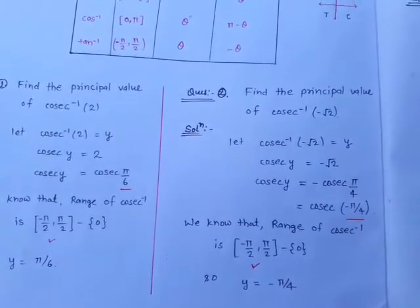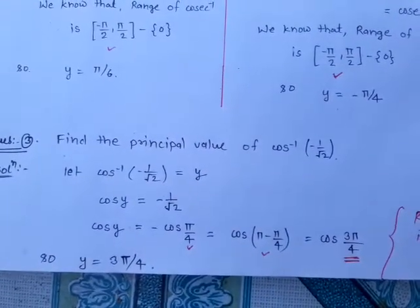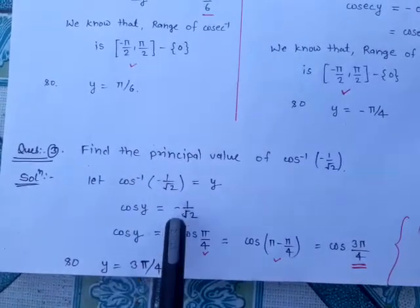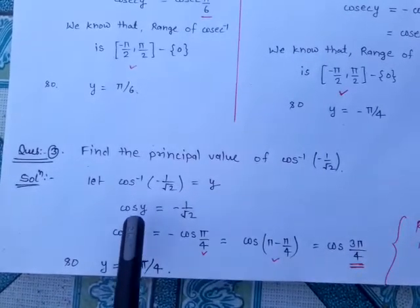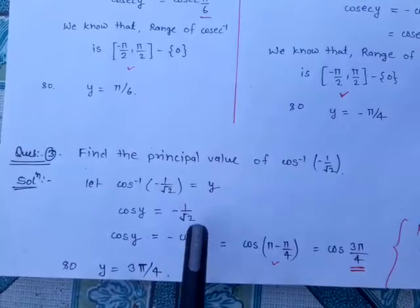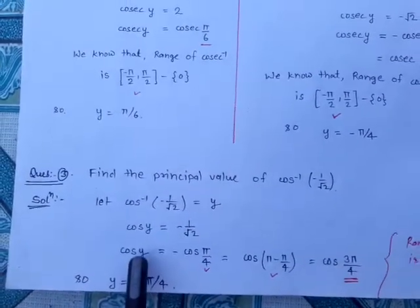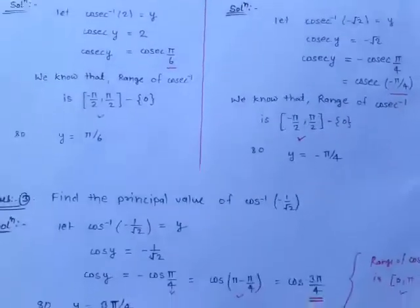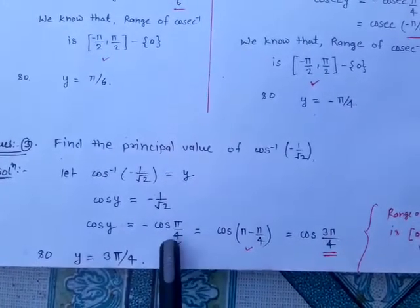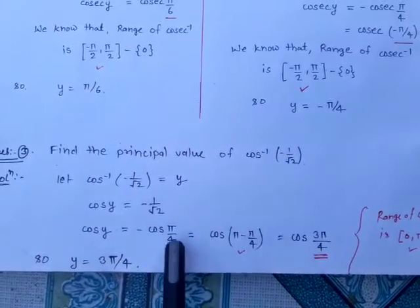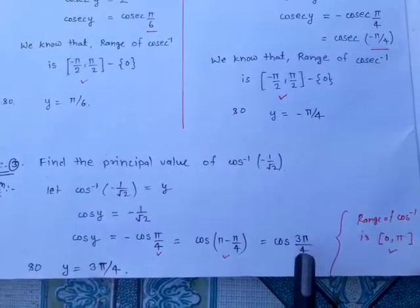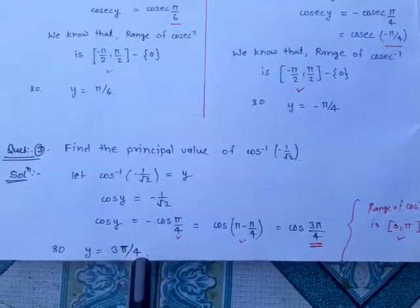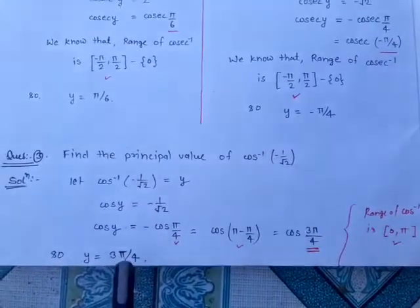Now the third question: find the principal value of cosec⁻¹(−1/√2). Let cosec⁻¹(−1/√2) = y, so cosec y = −1/√2. Ignoring the minus sign, cosec(π/4) = 1/√2 (i.e., 45°). So cosec y = −cosec(π/4), and since there is a minus involved, theta converts to π minus theta, giving cosec y = cosec(π − π/4) = cosec(3π/4). Checking the range, 3π/4 belongs to [0, π], so y = 3π/4. The principal value of cosec⁻¹(−1/√2) is 3π/4.